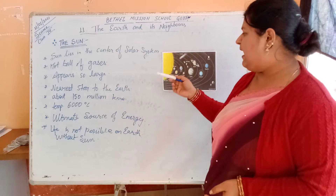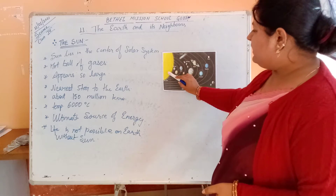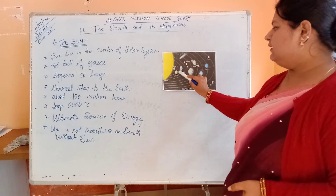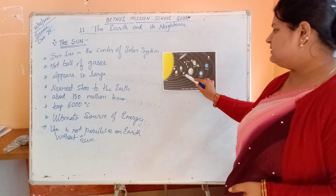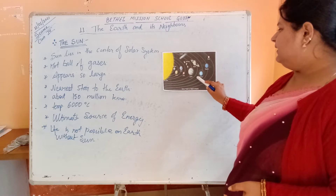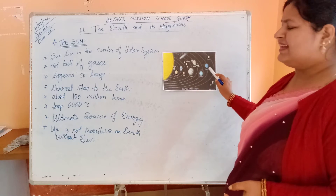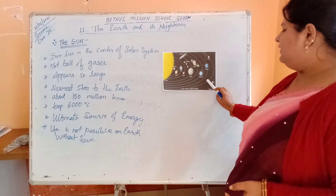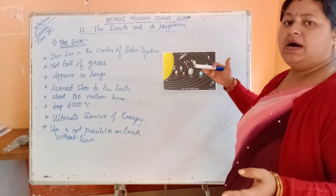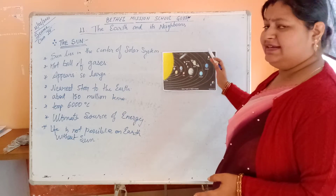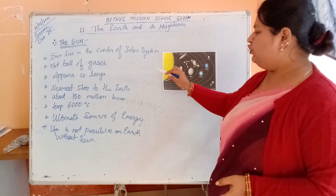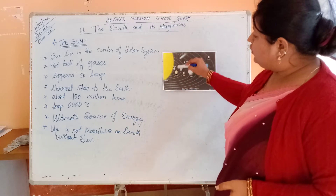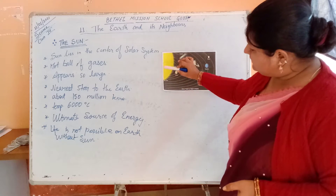On their fixed path you can see Mercury, Venus, Earth, Mars, Jupiter, Saturn, Uranus, and Neptune. Nowadays Pluto is no longer classified as a planet, so we have these 8 planets revolving on their own orbits.